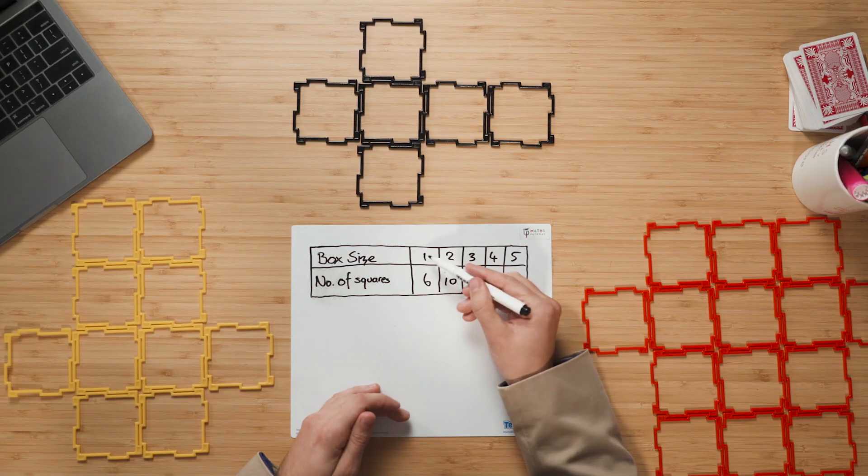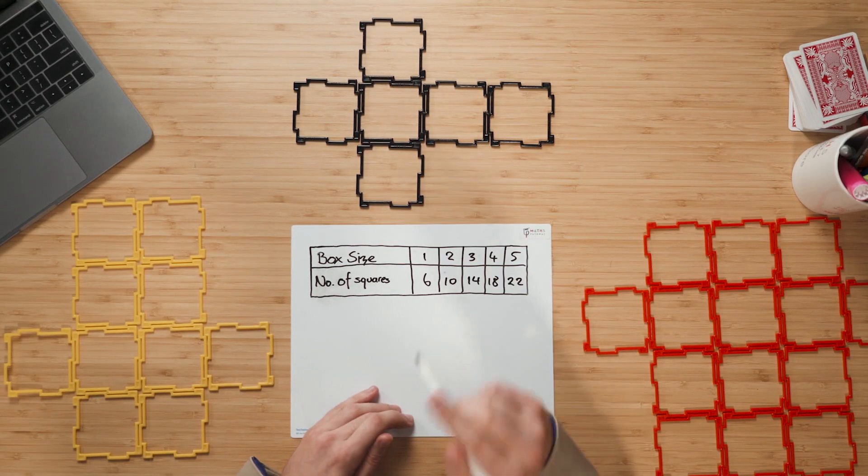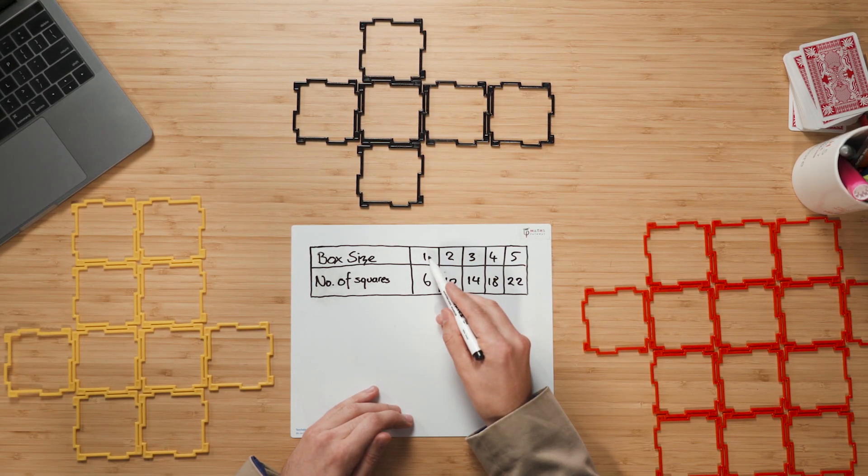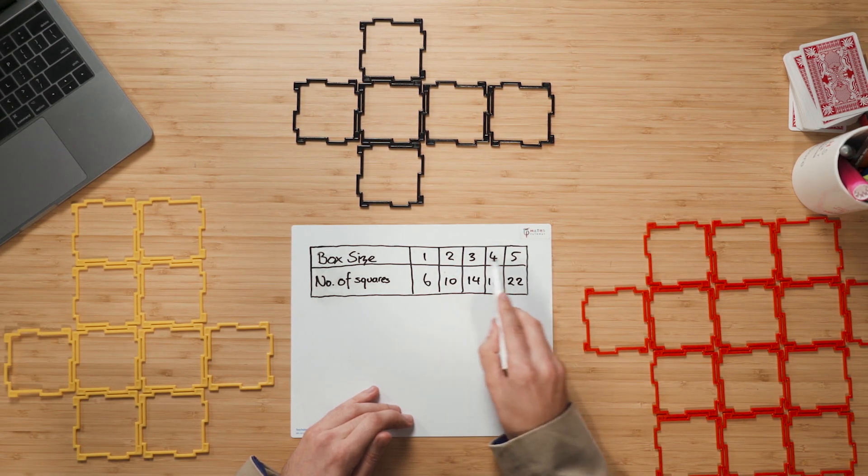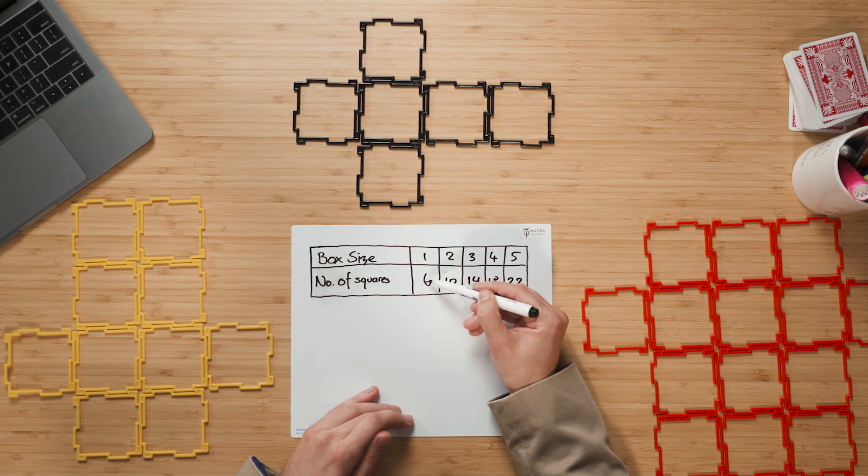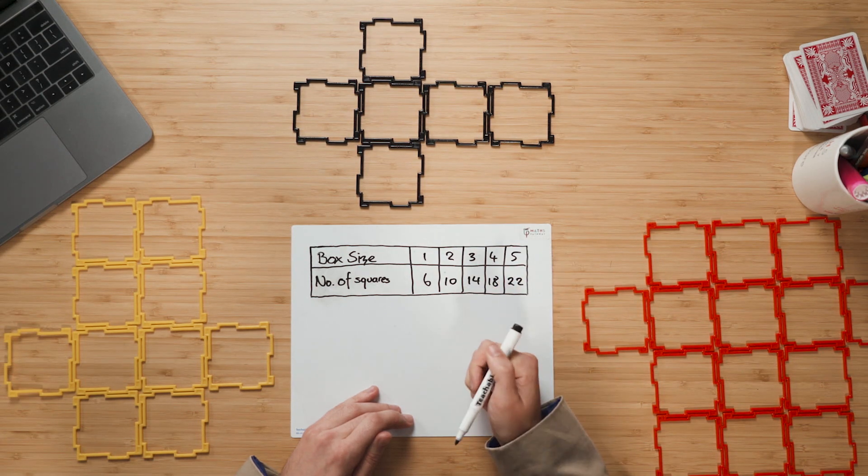So this is where we start to get students to actually think about how these numbers relate to each other. What I mean by that is how do these numbers in the top row relate to the numbers in the bottom row. Before they were looking across, whereas now we want them to look from the top to the bottom, the top to the bottom, as you can see there.